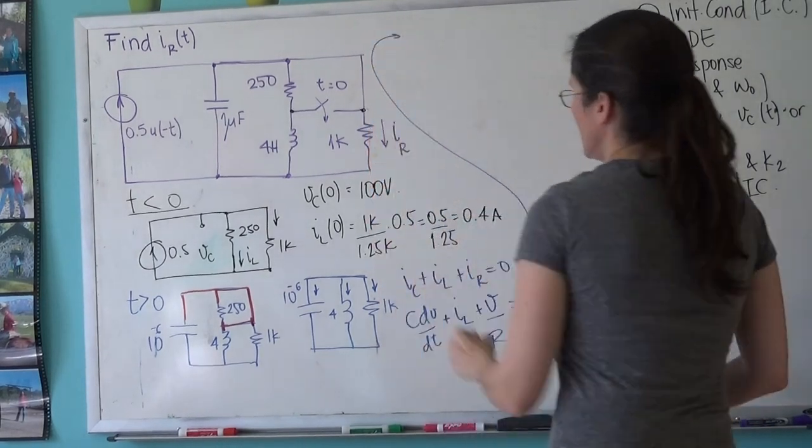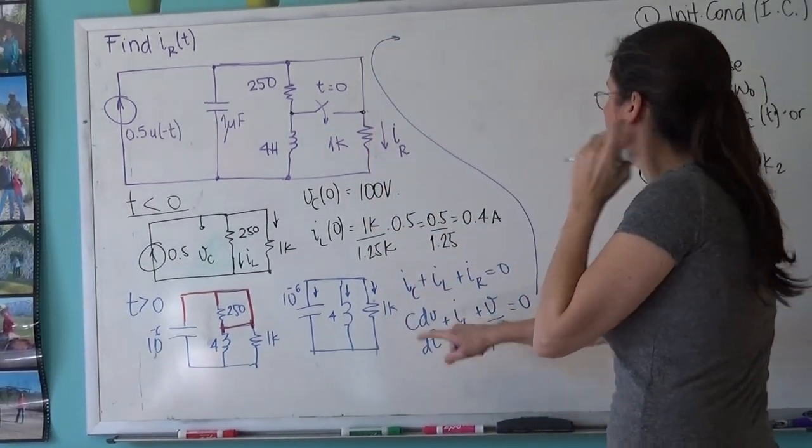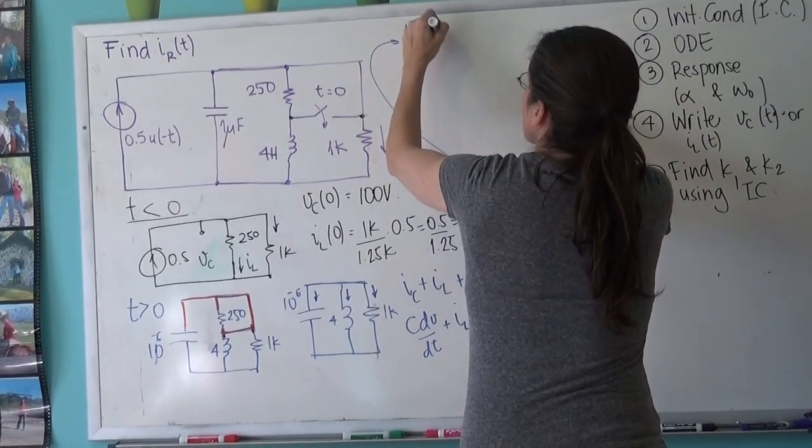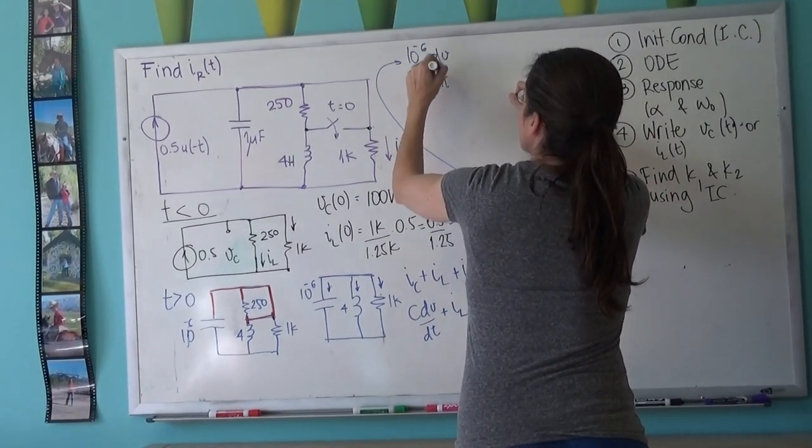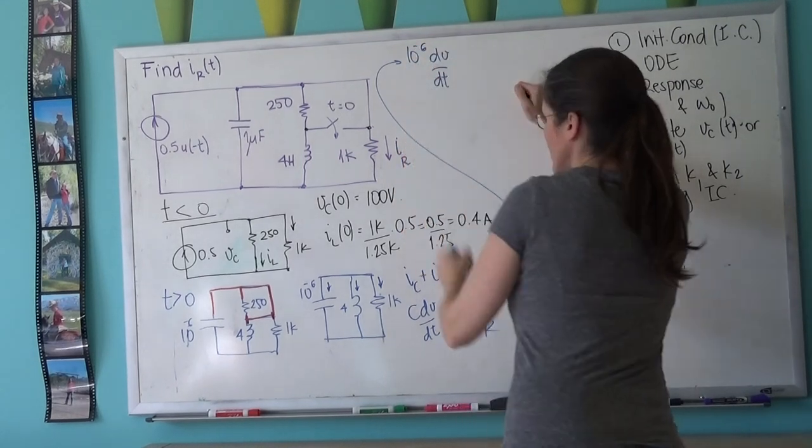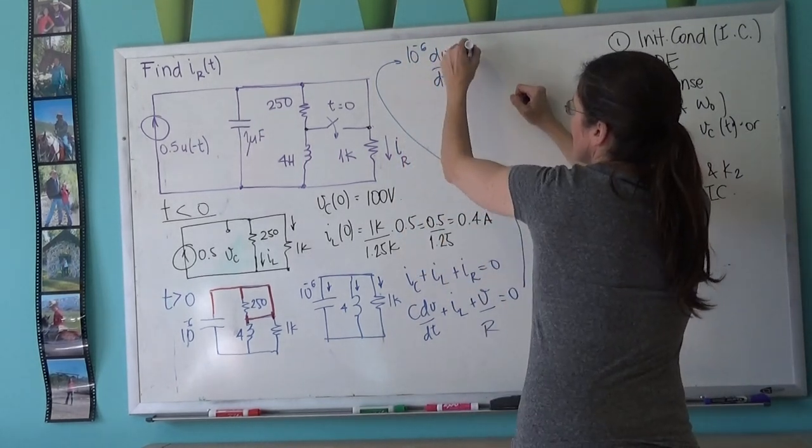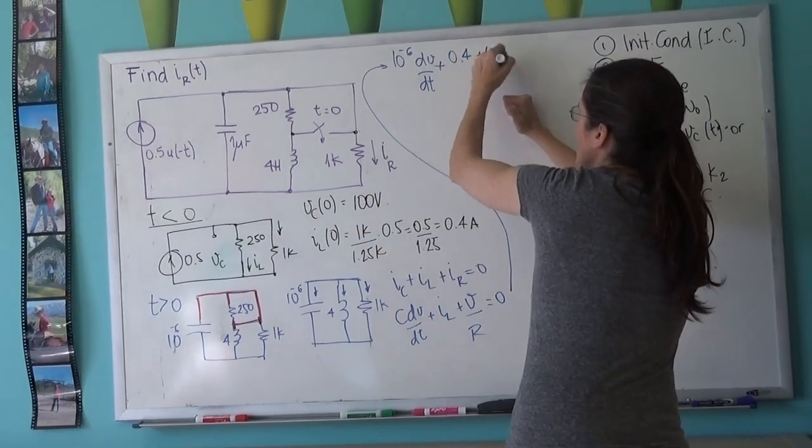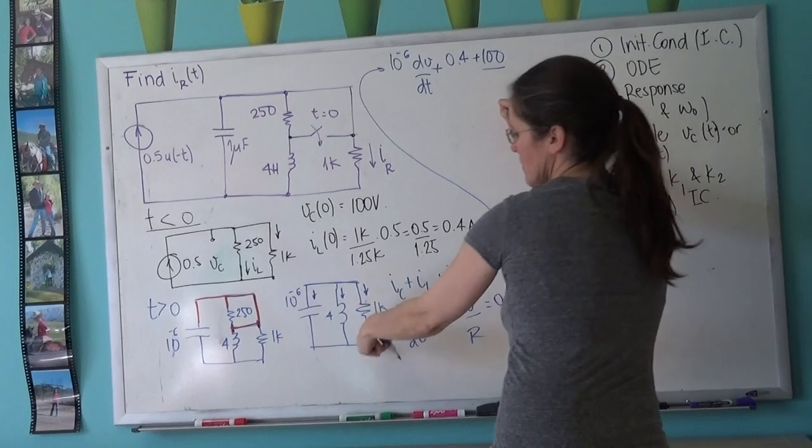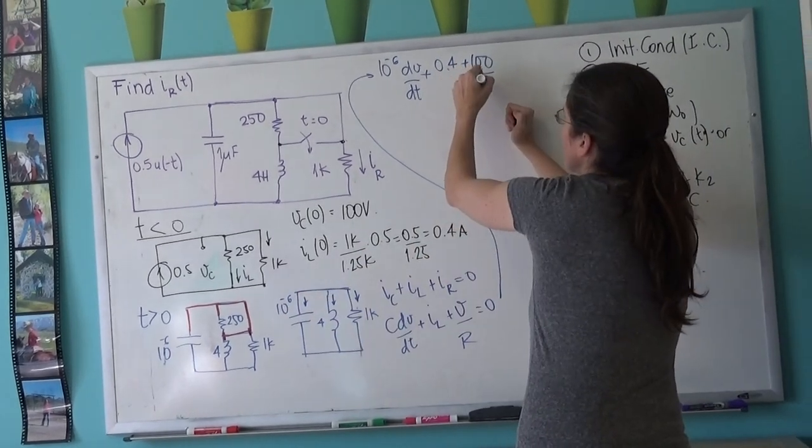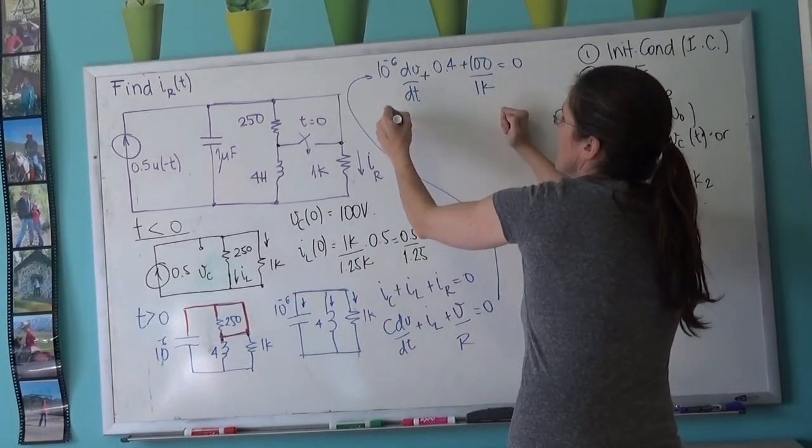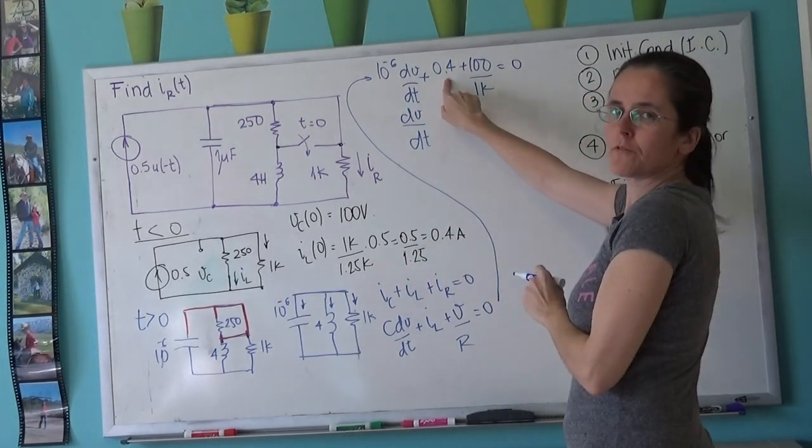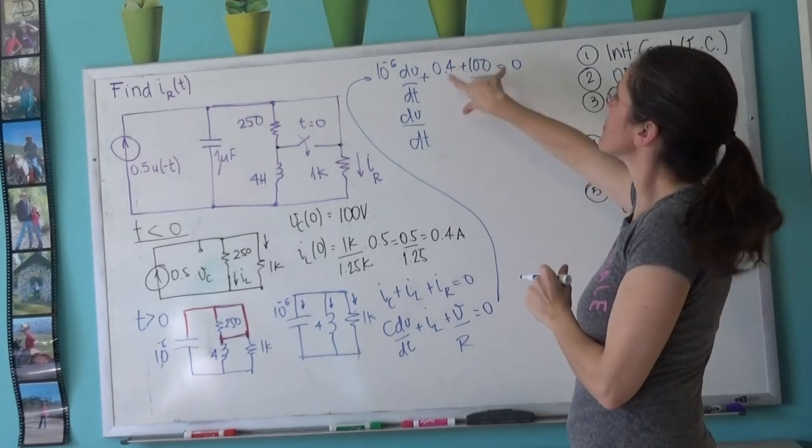Now this is what I'm trying to find: the V, dV/dt. But I'm gonna substitute everything else that I have at t equals zero. So this is really at zero plus 0.4, IL, plus the voltage on the capacitor is a hundred, which is the same as voltage on the resistor, divided by one K equals zero. So dV/dt: watch, this 0.4, this is 0.1, so this is 0.5 minus 0.5 times 10 to the 6 volts per second.